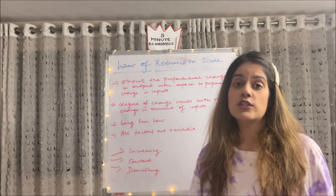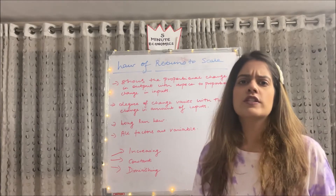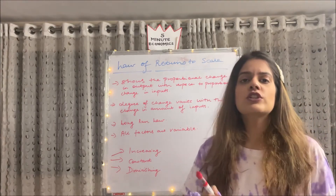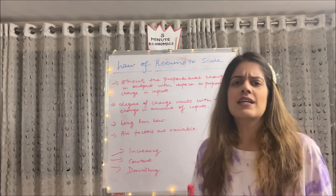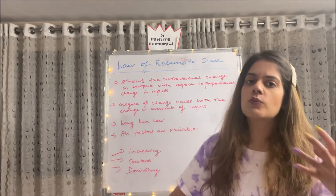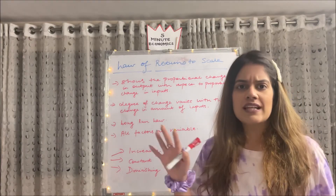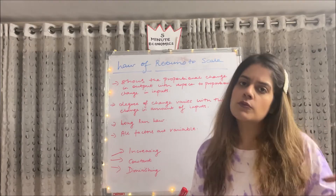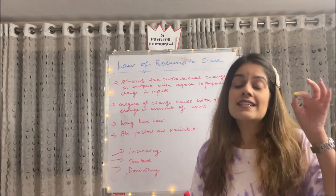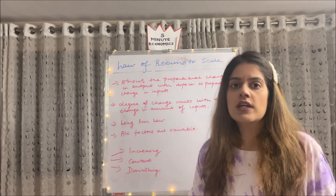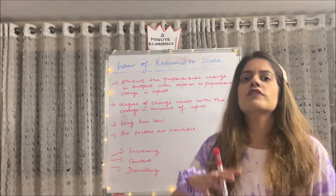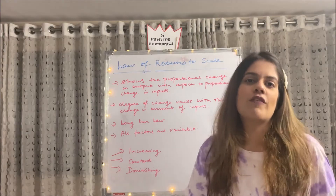So firstly, let me explain what exactly is the law of returns to scale. The law of returns to scale shows the proportional change in output due to the change in input — in plain and simple words, when we change our inputs, how much does our output change? For example, in a factory we have 10 labourers producing some amount of output, and if we increase that number to 20, what is the change in that output? Is it increasing or decreasing? When we study the change in outputs because of the change in inputs, that is known as the law of returns to scale.